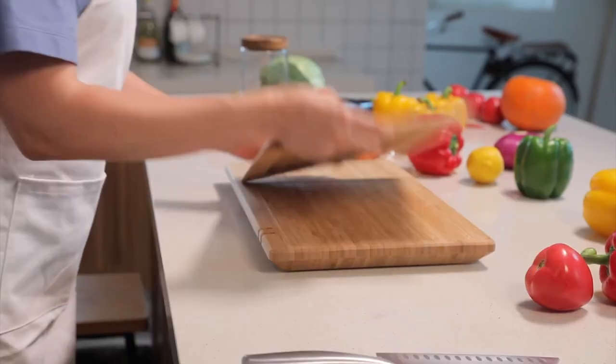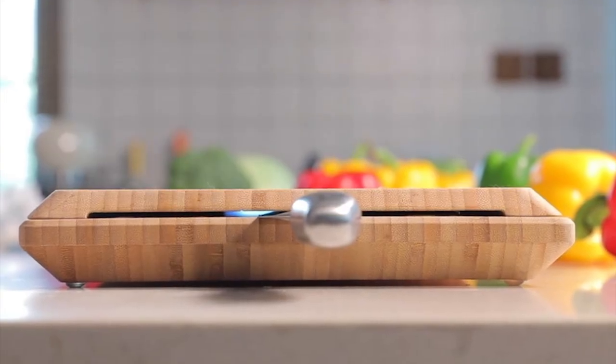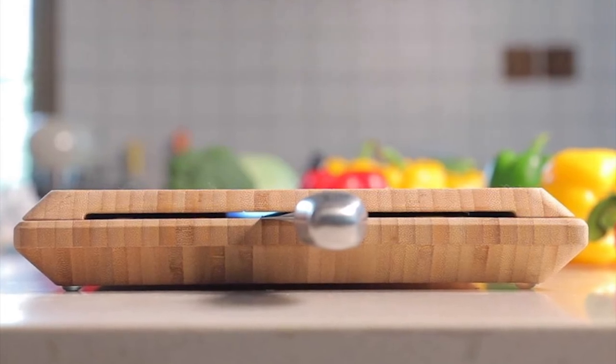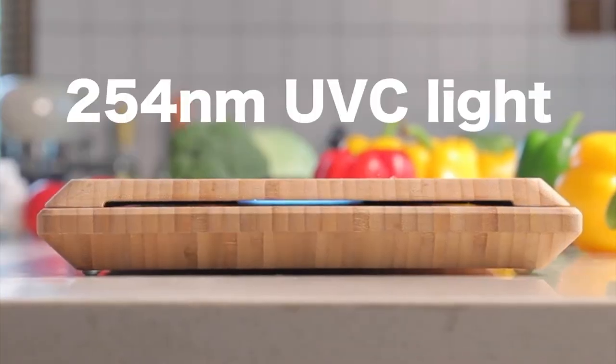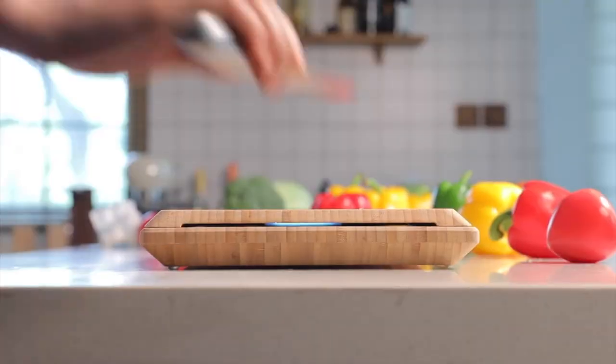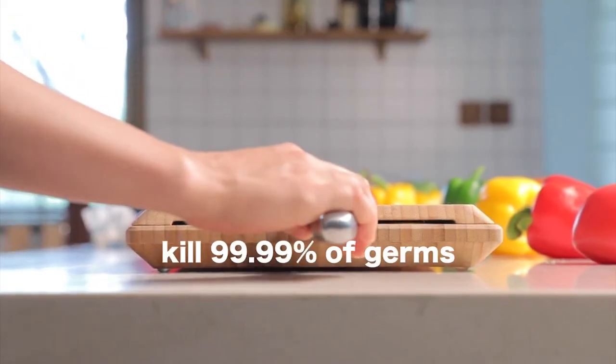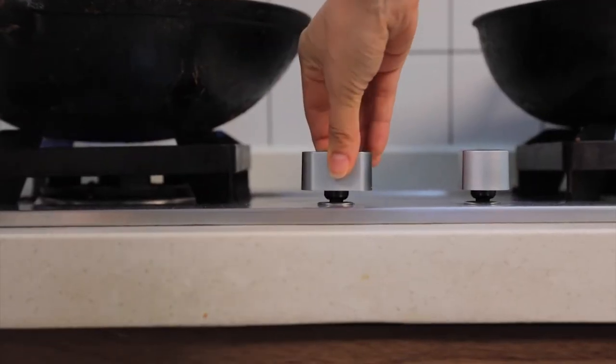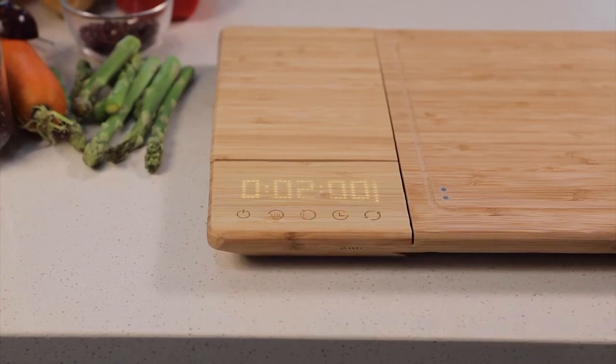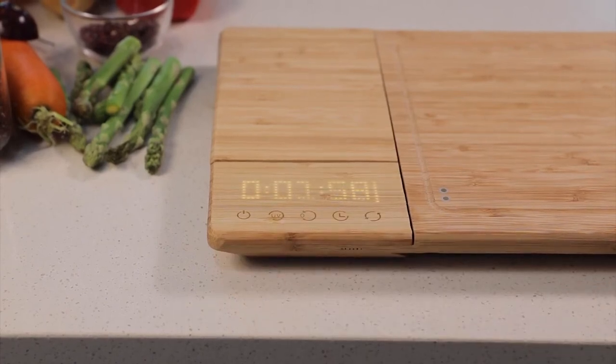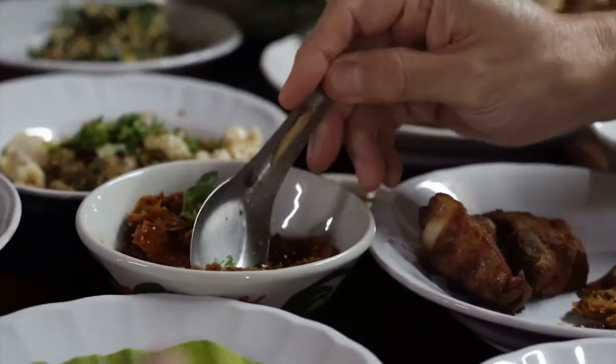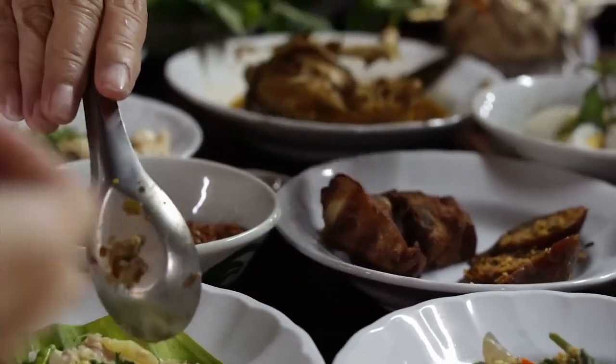With this gadget, you never have to worry about germs again with an inset sanitizing light. Just two minutes of ultraviolet light exposure kills 99.99% of germs and bacteria. Never overcook your food again. The organic bamboo's built-in LED timer can be set for up to nine hours and keeps you on track for perfectly cooked meals every time.